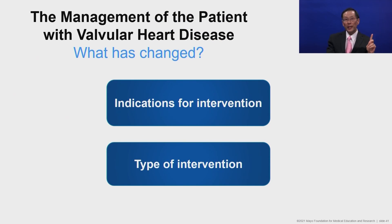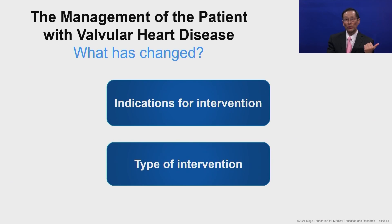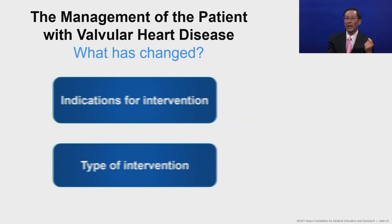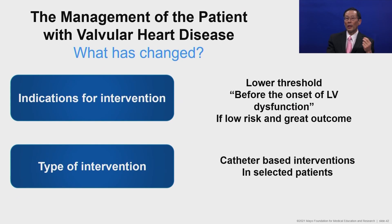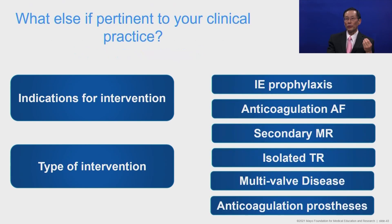In summary, what has changed in the management of valvular heart disease: number one, the indication for intervention — a lower and lower threshold to prevent the long-term adverse consequences on the left ventricle; and number two, the type of intervention — now that we have catheter-based interventions available in selected patients, it is a lower threshold before the onset of left ventricular dysfunction, with catheter-based options in selected patients.